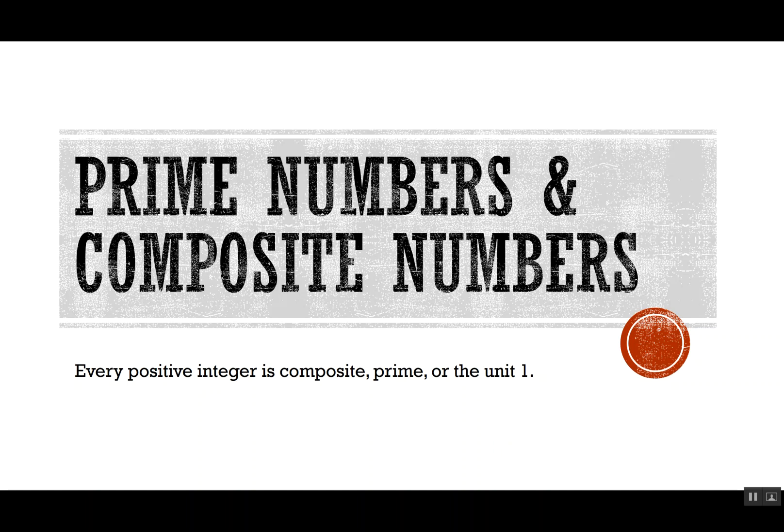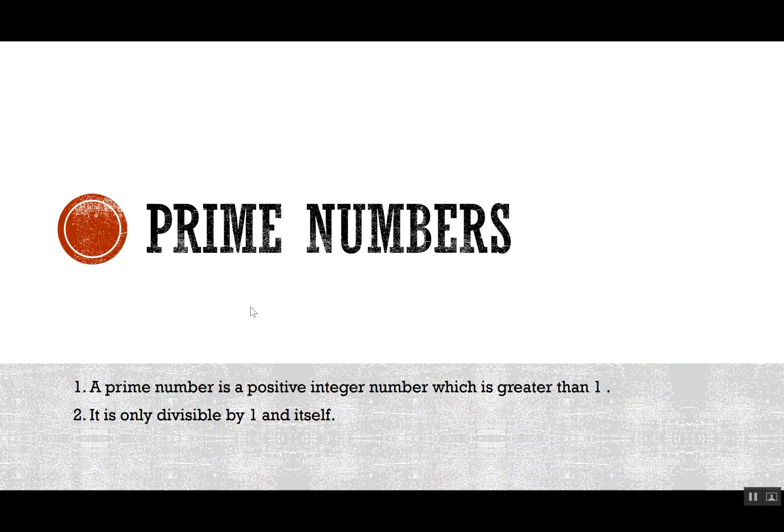Let's start with prime numbers. A prime number has two conditions. The prime number should be a positive integer number which is greater than 1, and it is only divisible by 1 and itself. If we consider any number as a prime number, that number should meet both of these conditions.